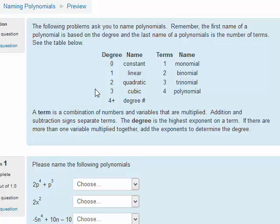The second name of a polynomial has to do with the number of terms. Terms are separated by a plus or minus sign. If there's one term, it's a monomial. Two terms are binomials. Three terms, trinomials. And four terms are polynomials.